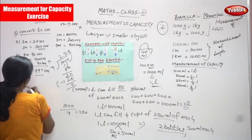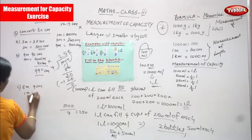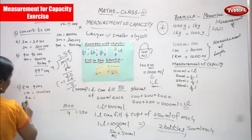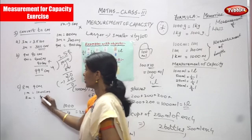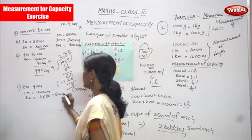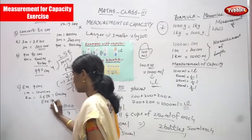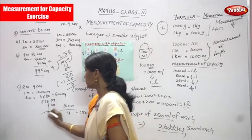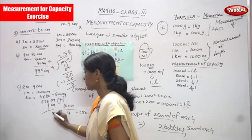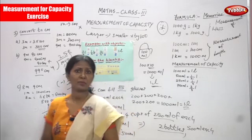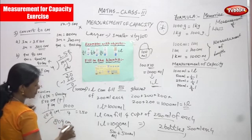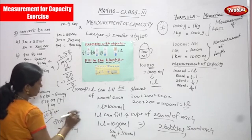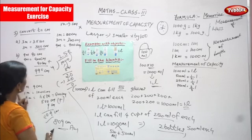Next question: 8 metre and 9 centimetre. So 1 metre is equal to 100 centimetre. 8 metre means bigger unit to smaller unit — 8 into 100 you can get 800 centimetre. Then 800 centimetre you add with 9 centimetre — because already 9 centimetre is given. So 809 centimetre is the right answer for the question.